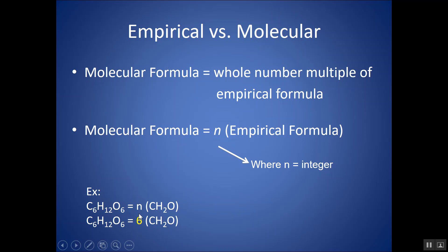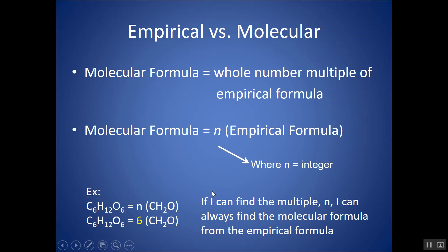But if I can figure out what this integer is, then I can figure out what the molecular formula is if I'm given the empirical one. So if I can find this multiple, I can always find the molecular formula if given the empirical. This multiple is not only true of the subscripts — it's actually also true of the masses. The molar mass of CH₂O, if I were to multiply it by six, I would get the molar mass of the molecular formula of glucose.